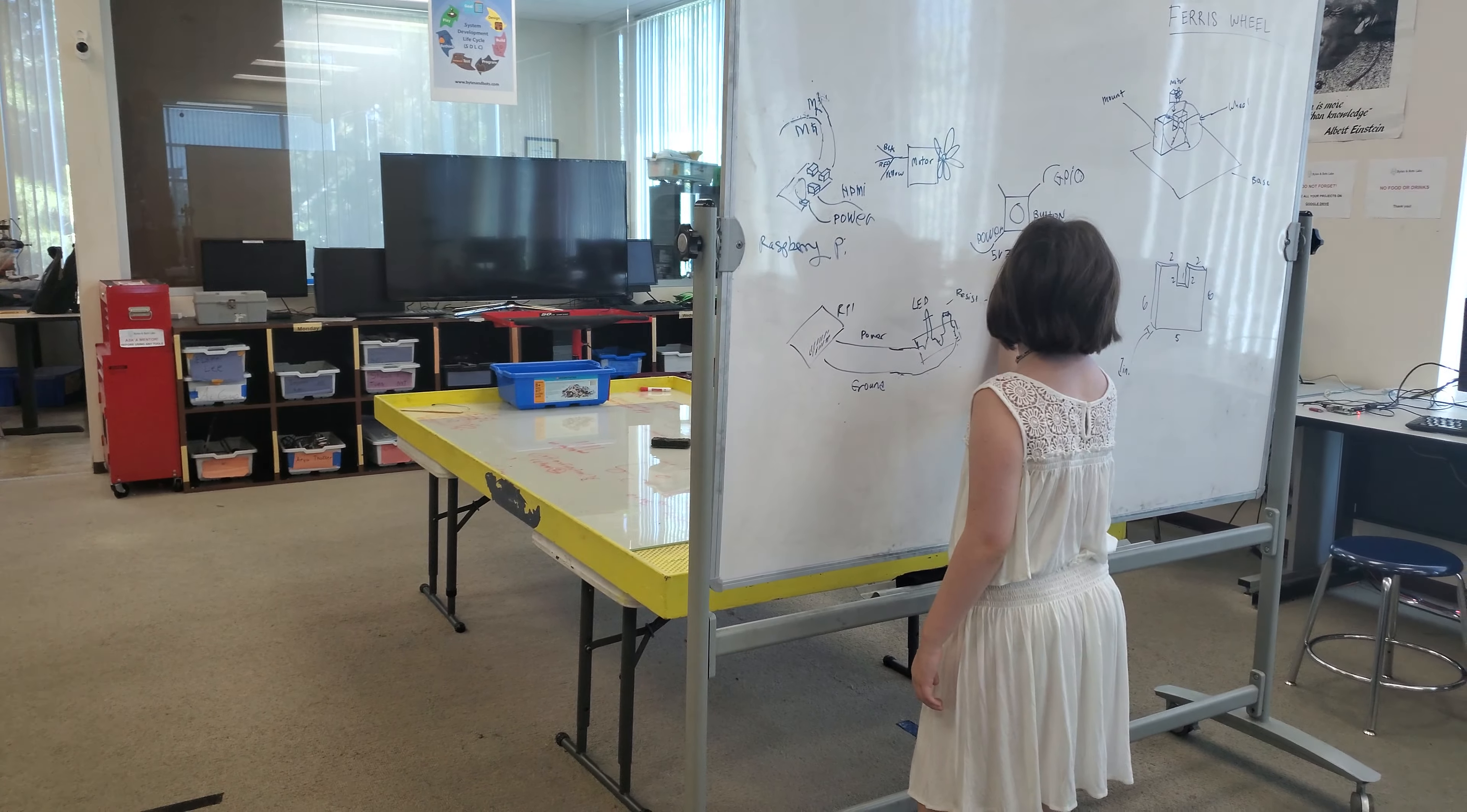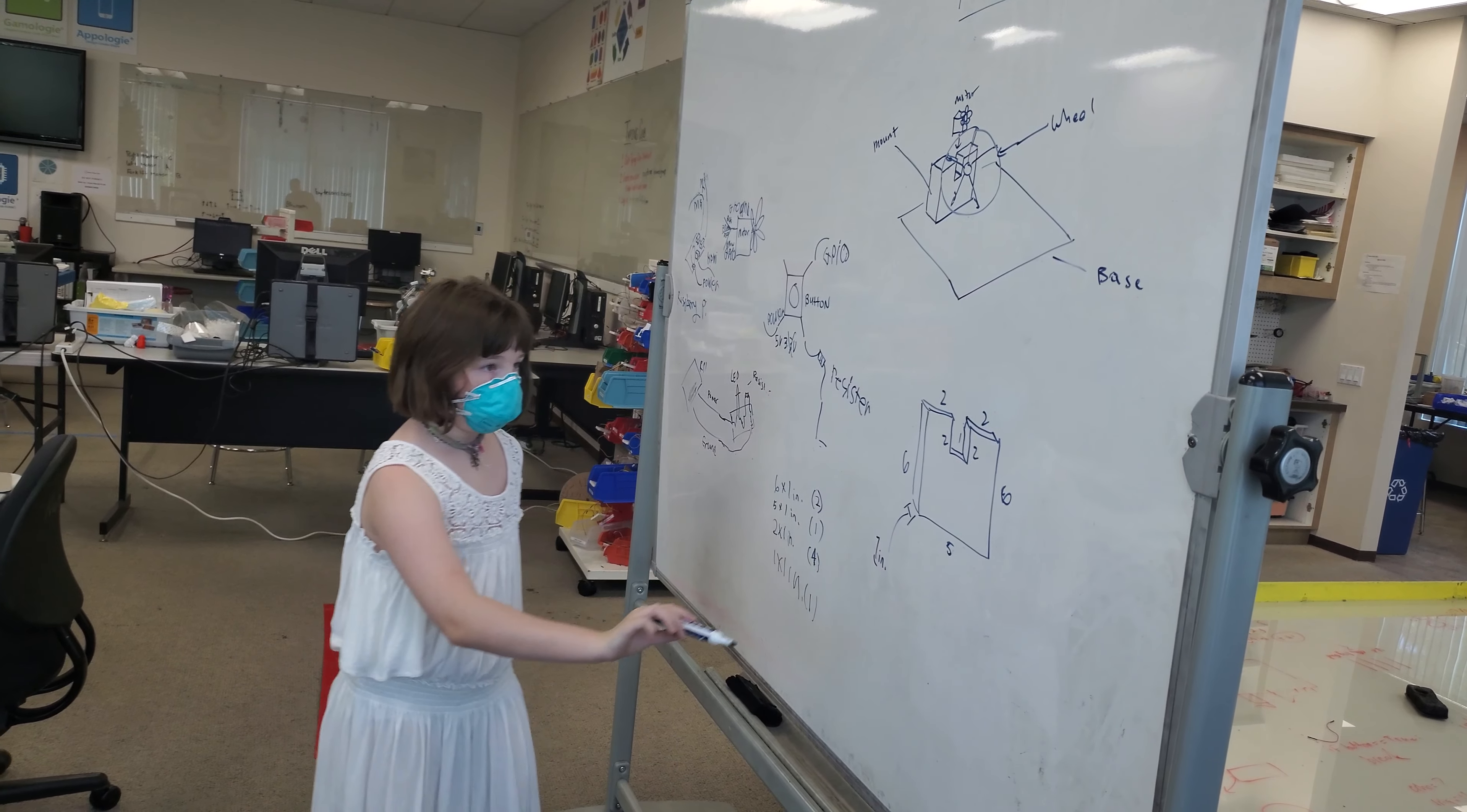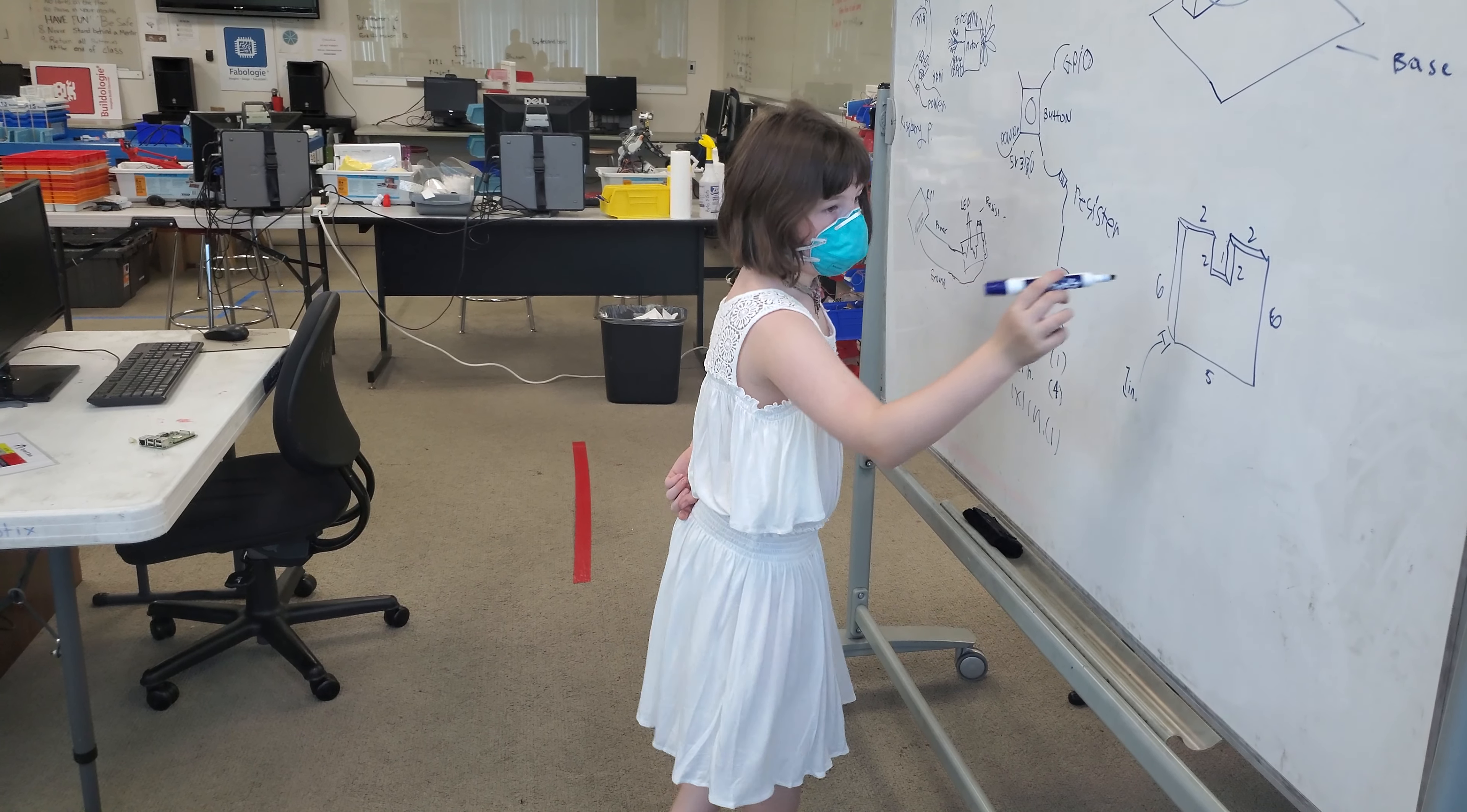And this is the box that we made to hold up the barrel. Let me get right here. Six inches. Wait, six by, we need two six by one inch for the sides. One five by one inch for the bottom. Four, two by one inch for there, there, there, and there. One one by one inch for here. One one by one inch for here.